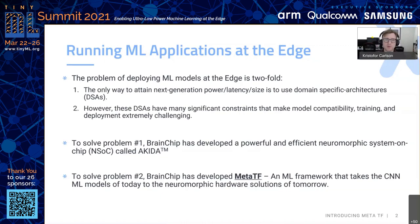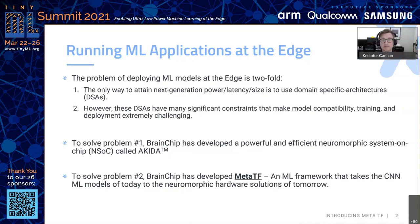To solve problem number one, BrainChip has developed a powerful and efficient neuromorphic system on a chip called Akita — and I won't be talking much about the hardware specifically today. What I'm really talking about is our solution to problem number two, the software problem. That's the idea that we've developed something called MetaTF, which is a machine learning framework that takes CNN machine learning models of today to the neuromorphic hardware solutions of tomorrow.